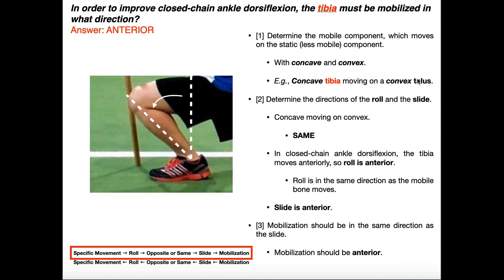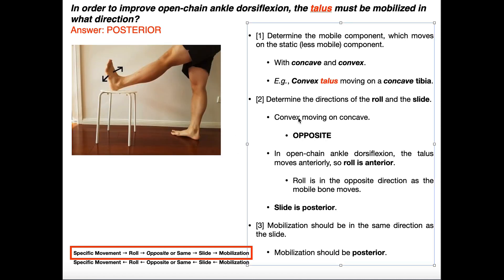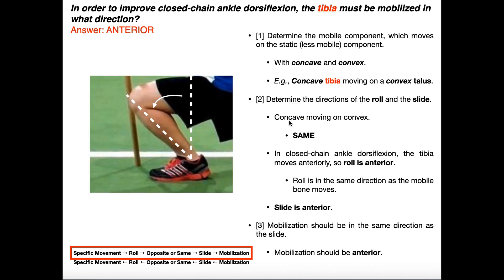We need to determine if roll and slide are opposite or the same. Now we have something concave moving on something convex. Since concave is first, roll and slide are in the same direction. Another mnemonic: concave is the only one of the two words with two of the same letter — two C's — so 'same letter, same direction.' Convex first means opposite; concave first means same. So for a concave tibia moving on a convex talus, roll and slide are in the same direction.